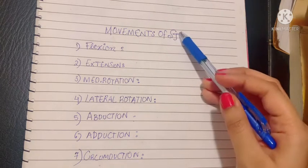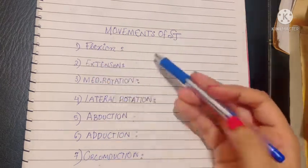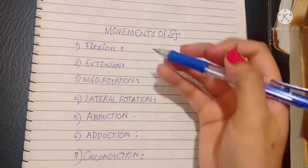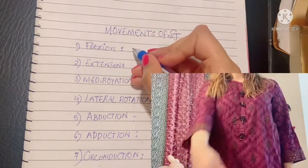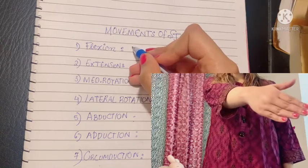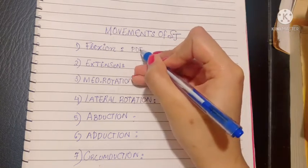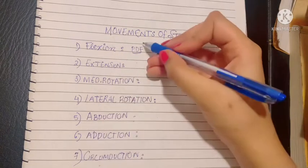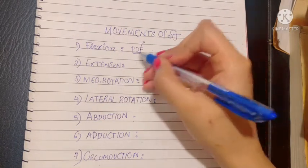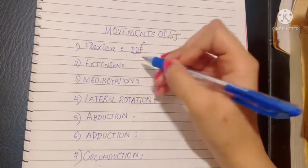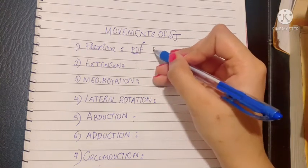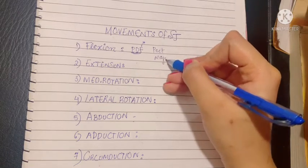The movements of the shoulder joint are about seven, and the first movement is flexion. Flexion at the shoulder joint is performed by PDF muscles. Remember this mnemonic: F is for flexion, and P and D are responsible for flexion. P and D are the pectoralis major and deltoid muscles.